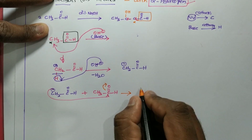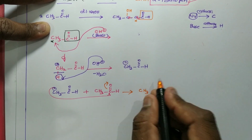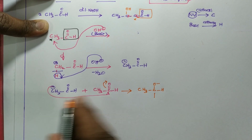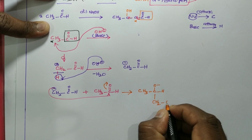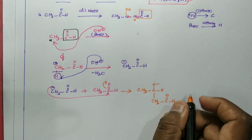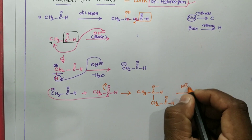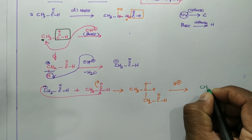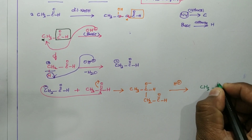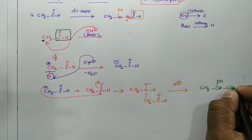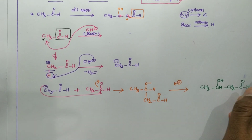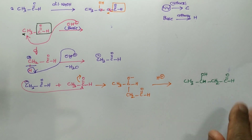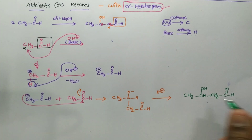It forms a product like this: CH₃-CH(O⁻)-CH₂-CHO. The incoming group CH₂ from the enolate attacks the carbonyl carbon of the second aldehyde molecule, giving CH₃-C(O⁻)(H)-CH₂-CHO. If I acidify this, I'll be getting the final product: CH₃-CH(OH)-CH₂-CHO. This is the beta hydroxy aldehyde product.